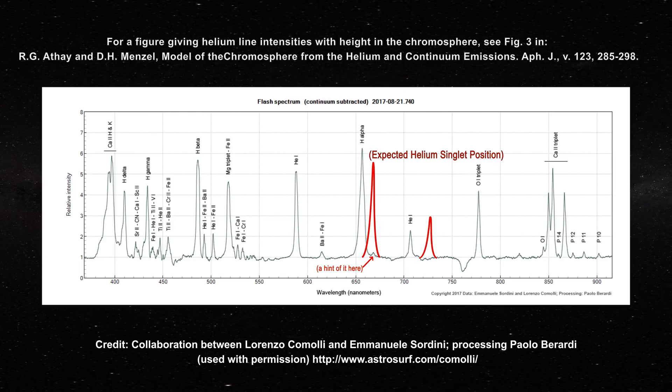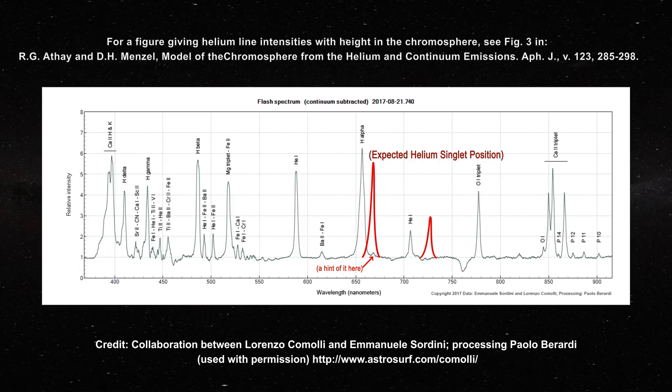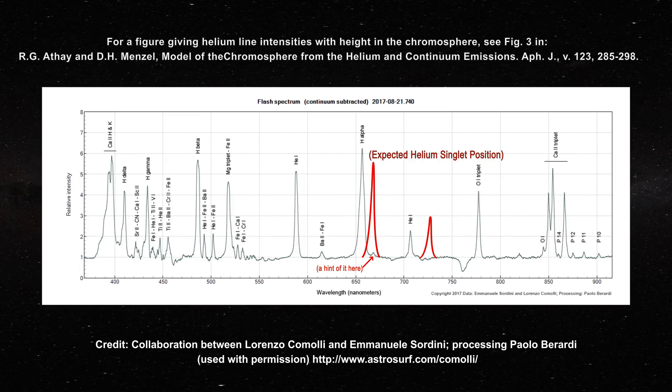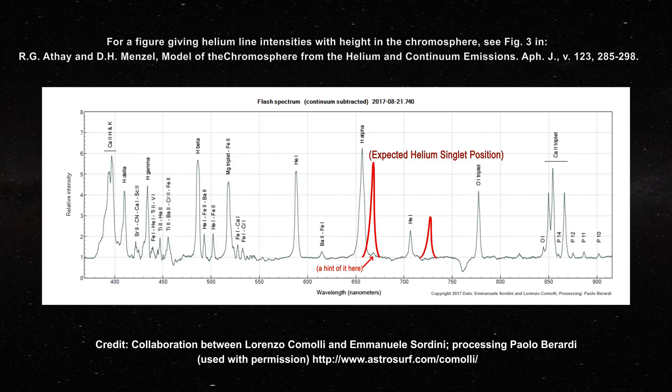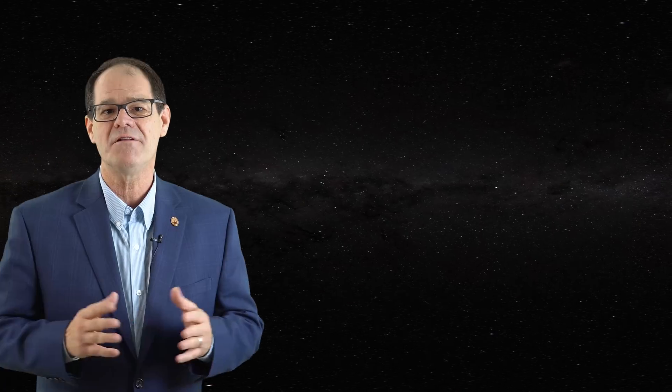Now, if the astronomers were correct and chromospheric lines were simply the product of random excitations governed by temperature, those singlet lines should be there just like they are in the laboratory. In fact, the problem is much worse than this.